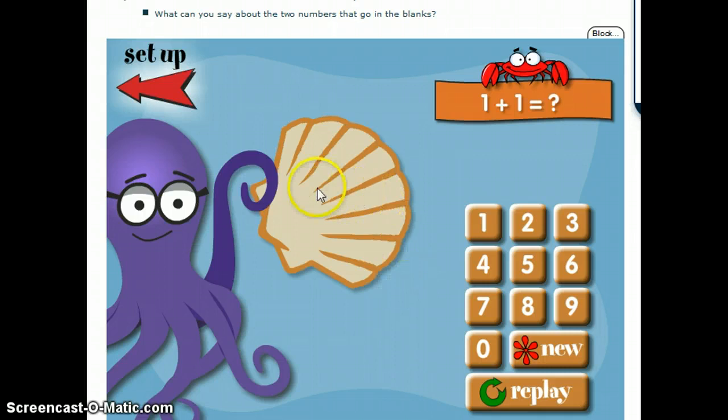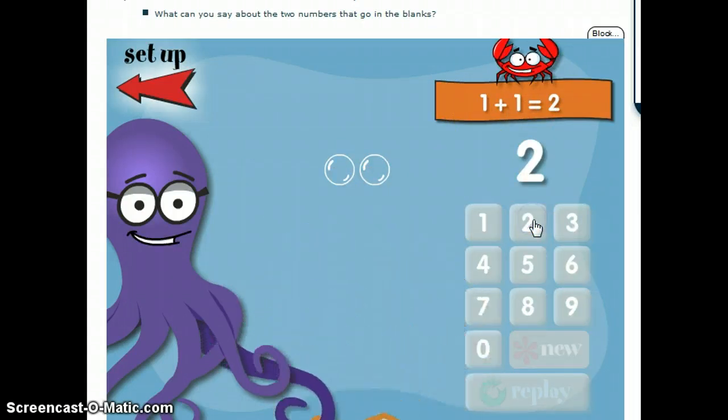Okay, so now this one shows that there was one bubble under the shell, and then we've got one more. So that would be one plus one. You can click on it, and it'll show that there were two under the shell.